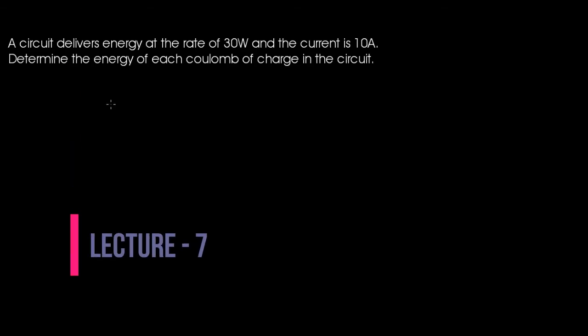In this lecture we shall solve a small problem about a circuit. The circuit delivers energy at the rate of 30 watts and the current is 10 amperes. We have to find the energy carried by each coulomb of charge present in the circuit.